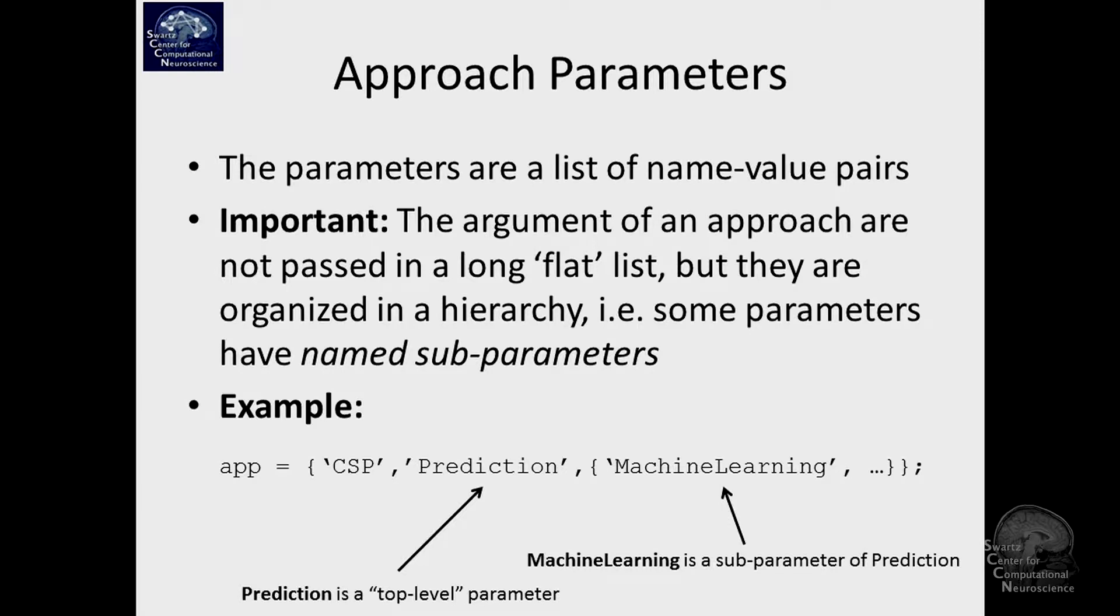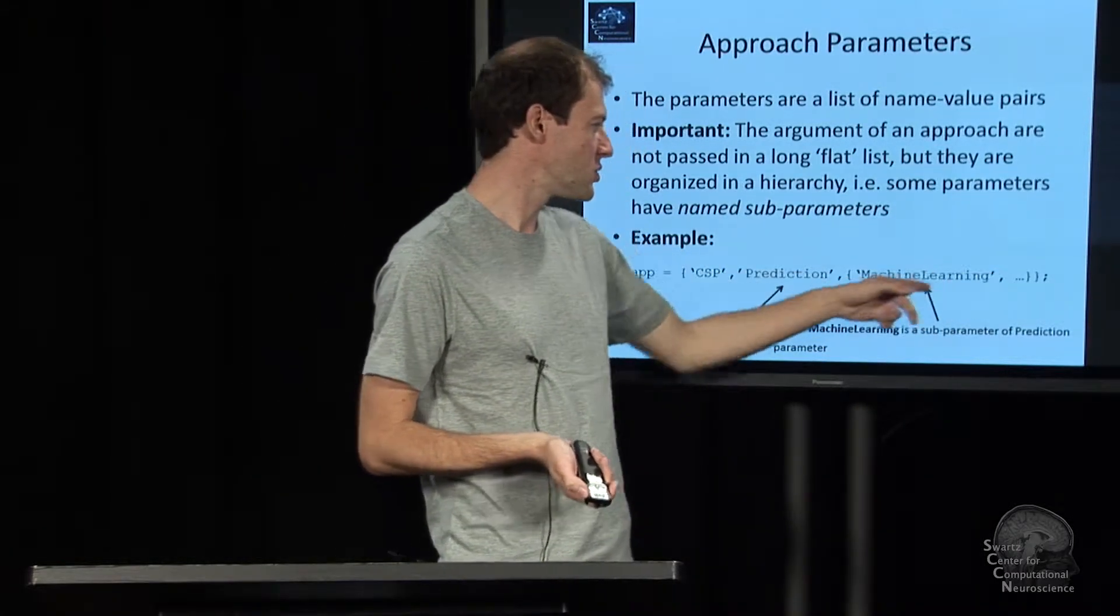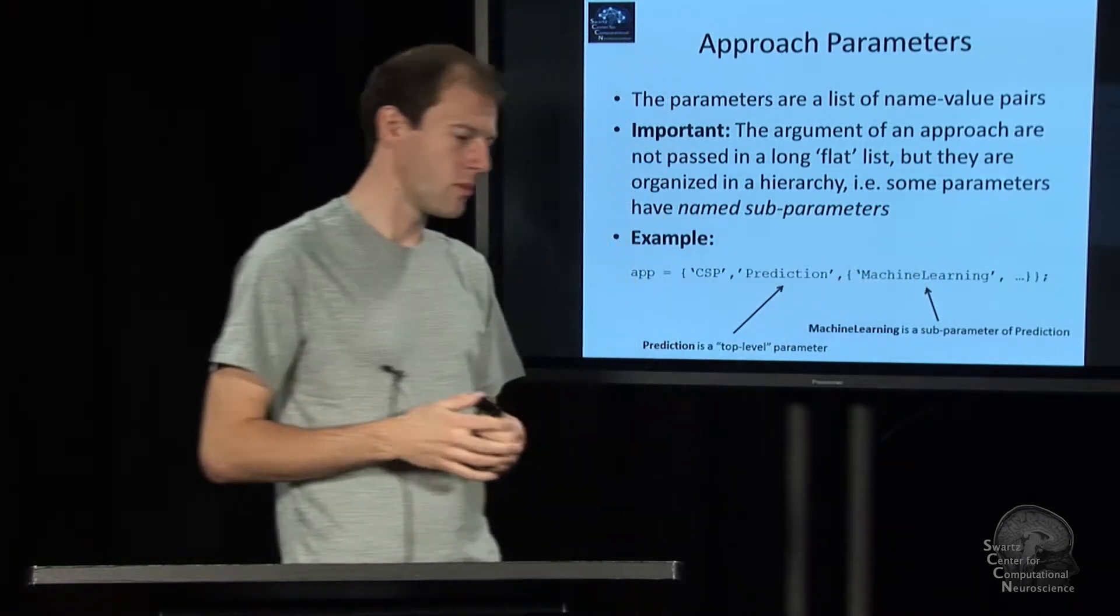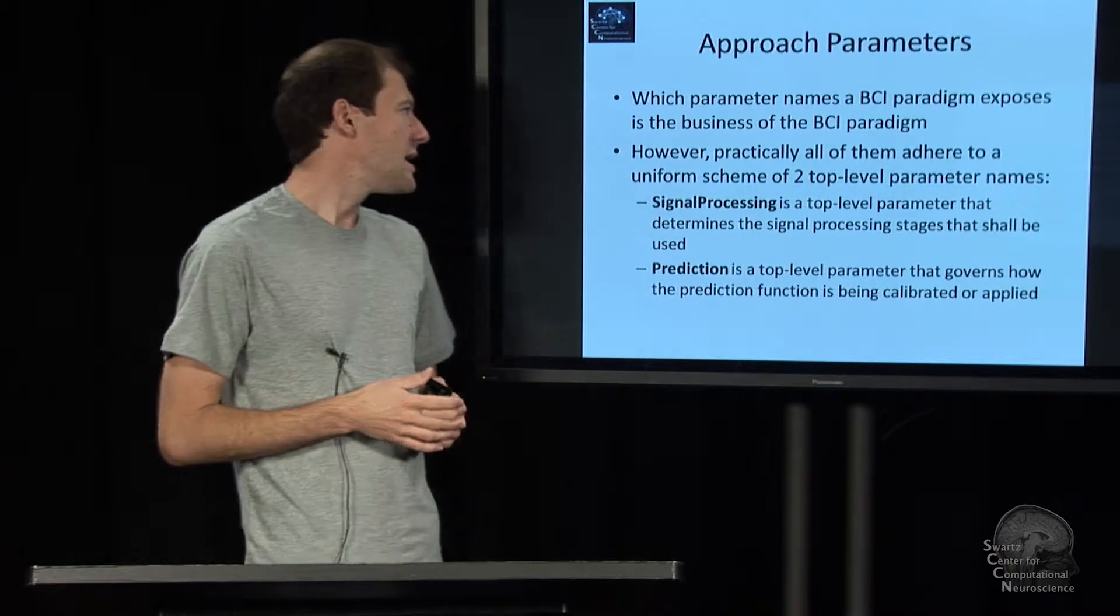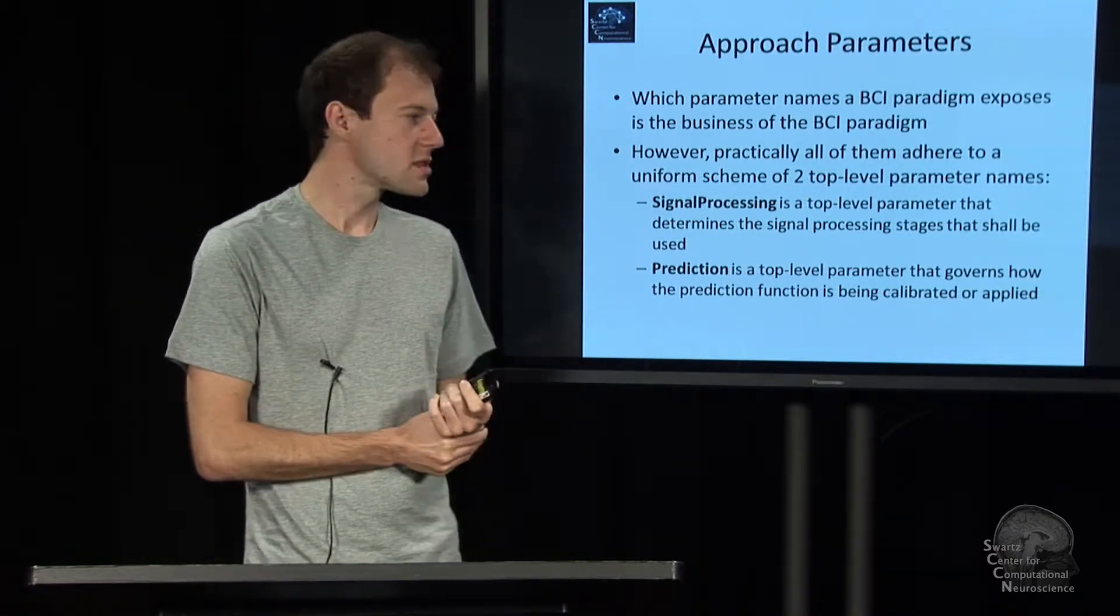For example, the CSP paradigm's calibrate function has a parameter called prediction, a top-level parameter, and this prediction parameter has a subparameter among others which is called machine learning. You could put a value here and assign something to the machine learning parameter of the prediction parameter and go on and assign more stuff to other things in the prediction department.